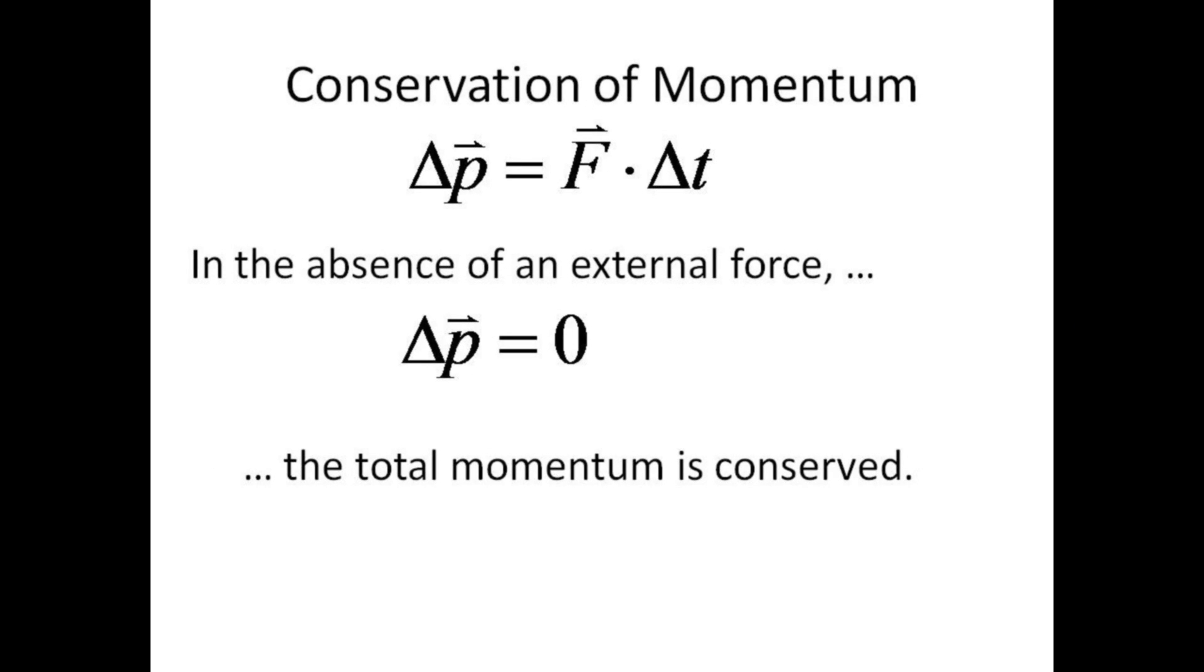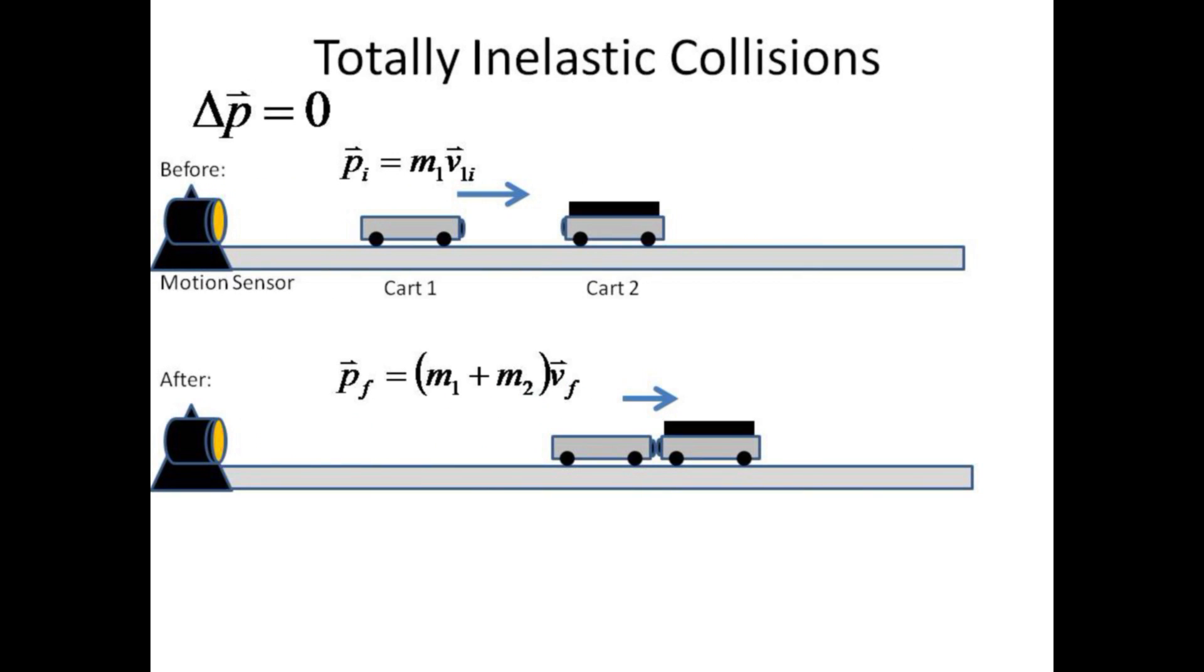We now move on to collisions between two carts. In the absence of any external force, we expect the momentum to be conserved, that is, unchanged. We begin with a class of collisions called totally inelastic, where the two objects stick together after the collision. Cart 1 comes into the collision with momentum m1 v1 initial. The two carts leave the collision with momentum m1 plus m2 times v final. These two momenta should be the same.